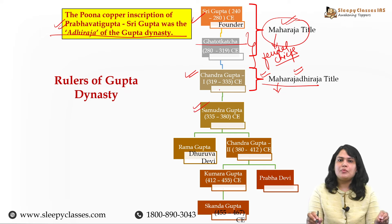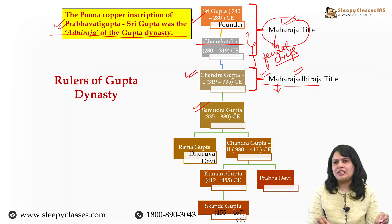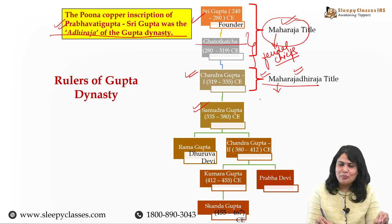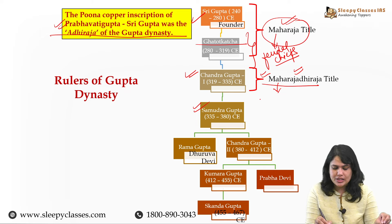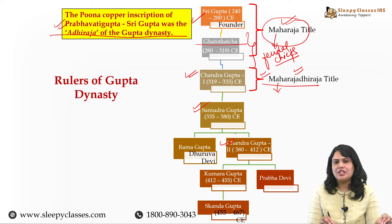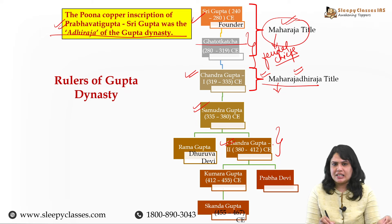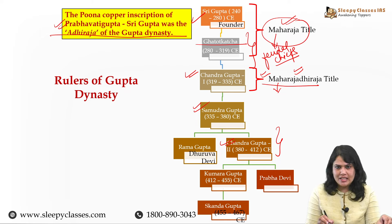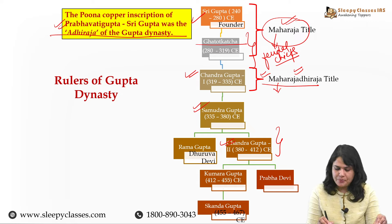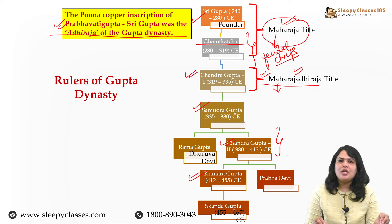Chandragupta First ko Samudragupta ne succeed kiya, aur inke time pe hum dekhte hai extensive military conquest. Napoleon of India kaha jaata hai inko, because of successful military conquest. Samudragupta ke baad mein Ramgupta huye, jinka reign bahut brief tha, aur uske baad mein Chandragupta Second, ya Chandragupta Vikramaditya, woh next Gupta ruler bane. Inhon ne further empire ka extension kiya, aur yeh inhon ne matrimonial alliances - yani diplomacy - and military conquest, dono ka sahara lete hue kiya.